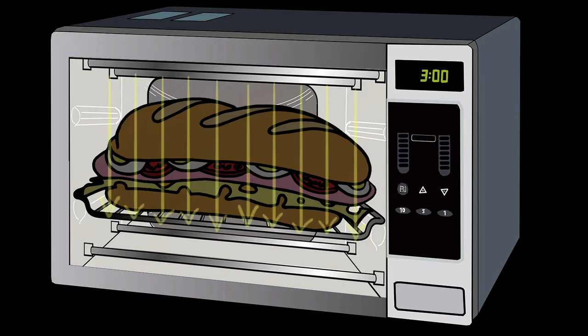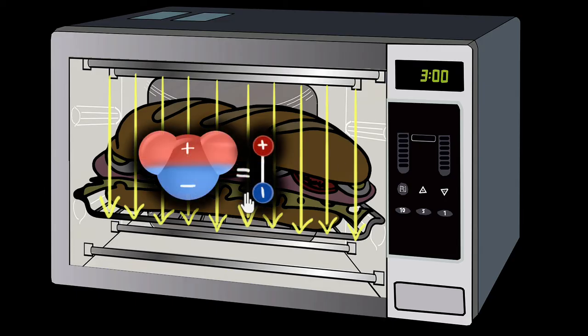Well, it turns out that these ovens produce electric fields and burgers or any food items contain moisture which have water molecules and these water molecules are electric dipoles. But wait, how does that explain anything? For that, we need to investigate what happens when dipoles are kept inside an electric field. And that's exactly what we're gonna do in this video.